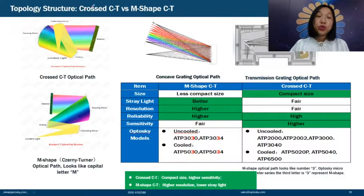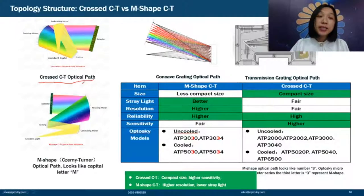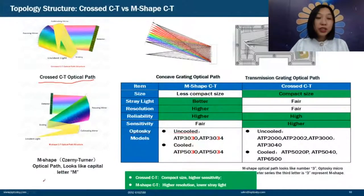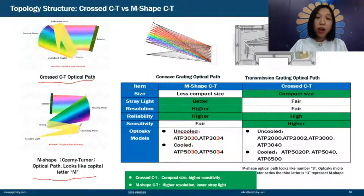The cross-CT optical path is used most commonly in spectrometers because it has a compact size and very good sensitivity. The M-shaped CT optical path looks like a capital letter M — it is an unfolded optical path. M-shaped CT has a slightly larger size, but better resolution, lower stray light, and better reliability.